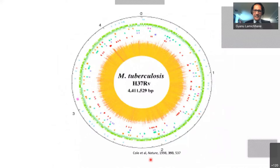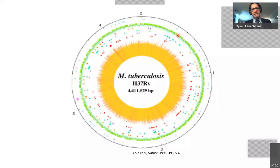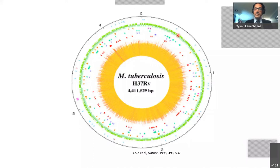Now let's do some basic science. In 1998, a group led by Cole et al. published the sequence of Mycobacterium tuberculosis and demonstrated that this 4.4 Mb circular genome encoded around 4,400 genes. We asked a simple, unbiased question: which genes are essential for bacteria to survive, be viable, and cause disease? We thought if we could identify this essential gene set — the essential proteins that MTB needs to be viable and cause disease — maybe we could find new drug targets not targeted by current drugs.